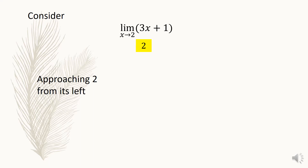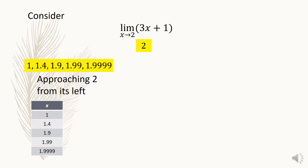We will use these values of x: 1, 1.4, 1.9, 1.99, and 1.9999. These are the values of x we are going to use. To find the value of f of x, we will substitute the values of x into the given function 3x plus 1. If x is equal to 1, we have f of 1, which is equal to 4.